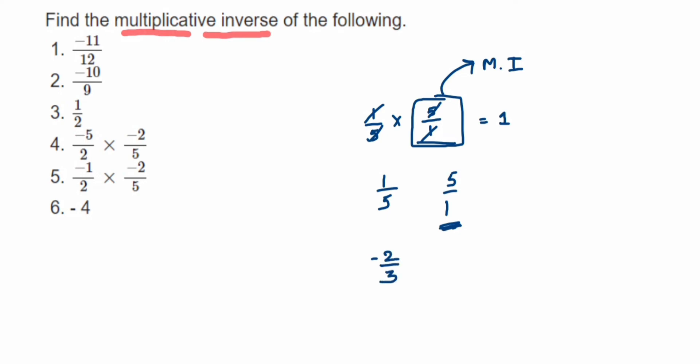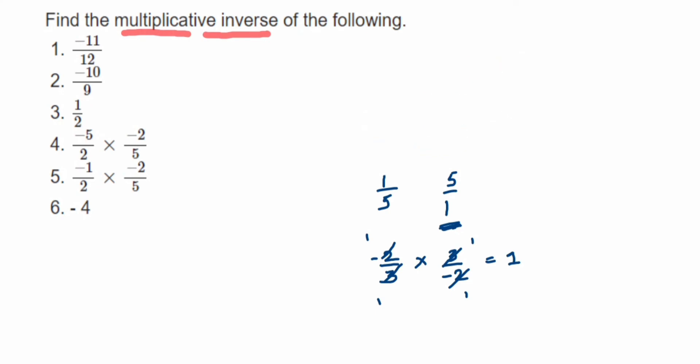Similarly, suppose you have -2/3. The multiplicative inverse of -2/3 will be 3/(-2). You just reciprocal it, so that when you cancel the numbers out you get the answer 1. Remember, this will not become 0 — it will become 1. We cancel -2 with -2, and 3 with 3, so the answer remains 1, not 0.